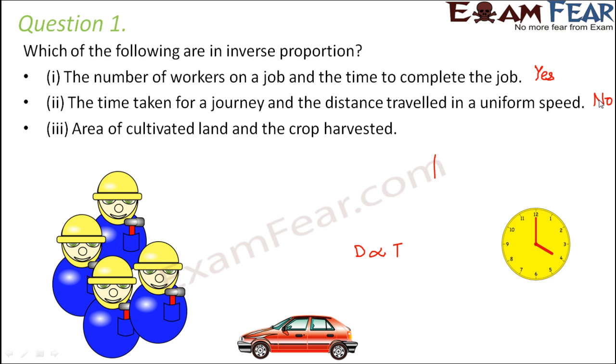Area of cultivated land and the crop harvested. Now more land you have, more crop will get harvested. So this is also a direct relationship. So this is also not inverse proportion.